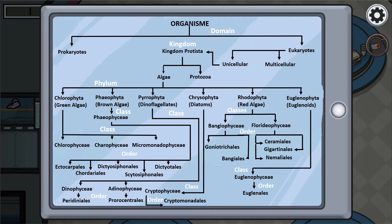For the phylum pheophyta, also known as brown algae, it has one class which is pheophyta, and that class is divided into five orders: ectocarpals, cordyriels, dictyosiphonels, cytosiphonels, and dictyotales. For the phylum pyrophyta, also known as dinoflagellates, it has two classes: dinophyciae and adinophyciae. Under dinophyciae is the order peridineals, and under adinophyciae is the order prorocentrales.